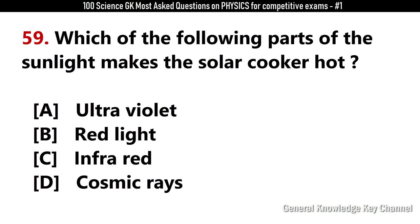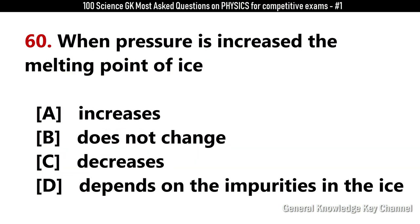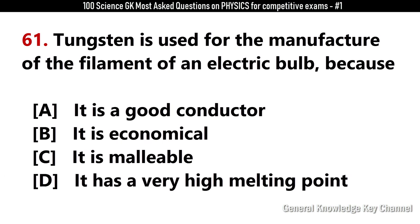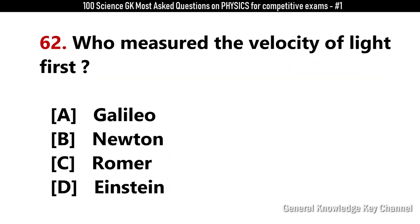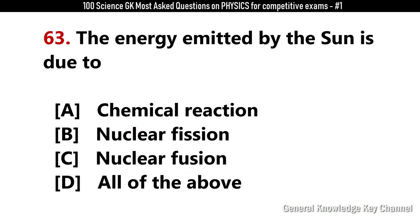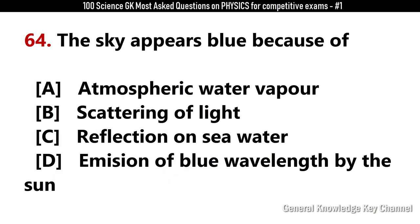Heat from the sun reaches the earth by? Answer C: Radiation. In which of the following cases is kinetic energy being used in performing work? Answer B: Driving a car to cover a distance. Which part of sunlight makes the solar cooker hot? Answer C: Infrared. When pressure is increased, the melting point of ice? Answer C: Decreases.